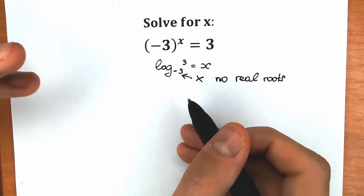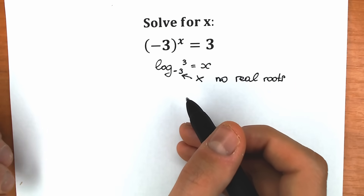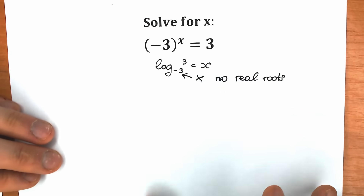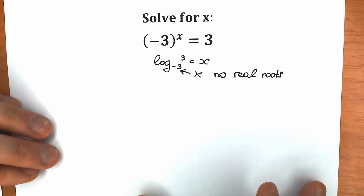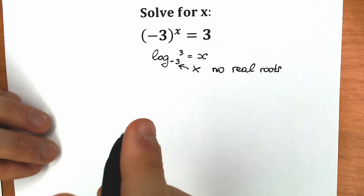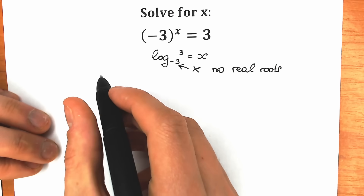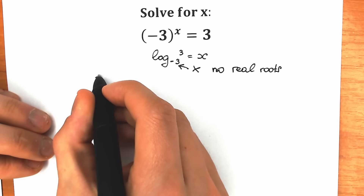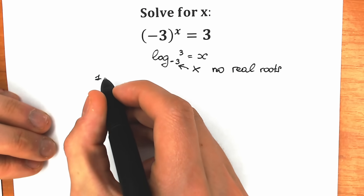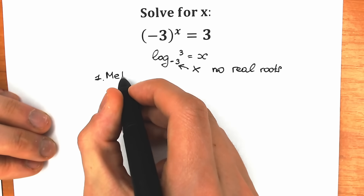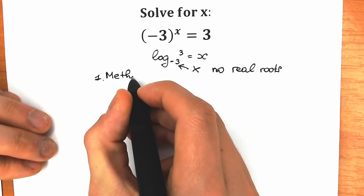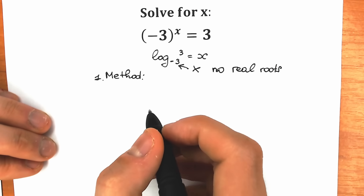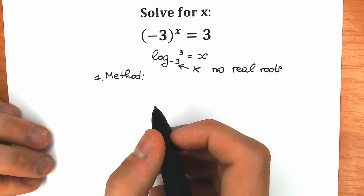But let's try to look at it from another perspective — the perspective of complex numbers. This is our first method; I'm going to show you two methods to solve this question in terms of complex numbers. Maybe we'll find complex roots.